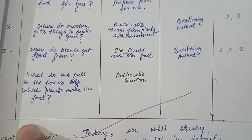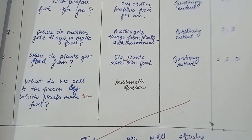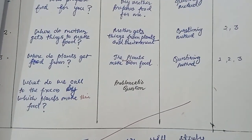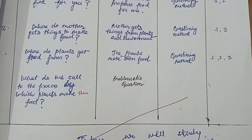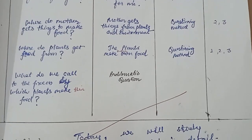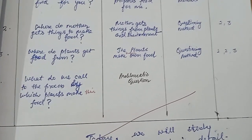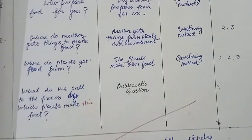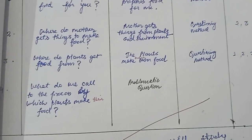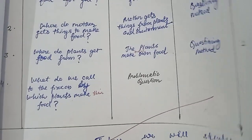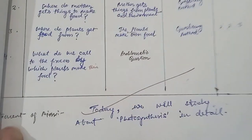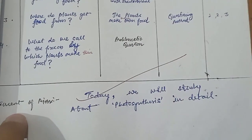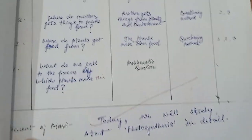Where do plants get their food? The plants make their own food — question method, components 1 and 2. How do we call the process by which plants make their own food? This is the problematic question — a question that students will not be able to answer. Components used: 1, 2, and 3.